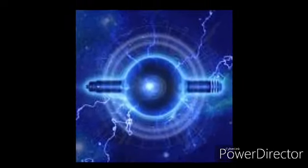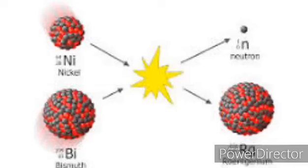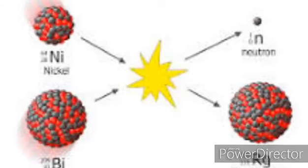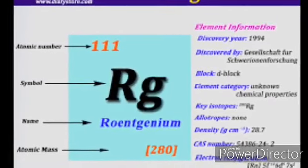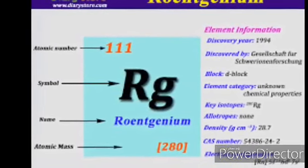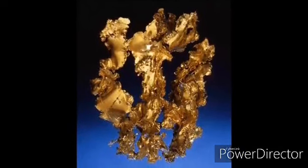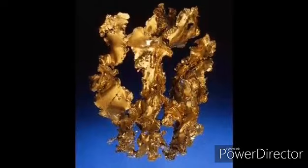Wilhelm Conrad Roentgen recognized X-rays as a unique type of rays with special properties. Roentgenium itself, however, has no commercial application and much remains unknown about its properties due to its extremely short half-life. At present, it is only used in research. The most stable isotope is 281Rg with a half-life of about 26 seconds.